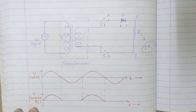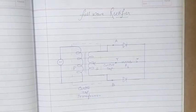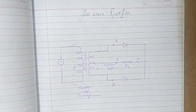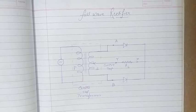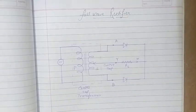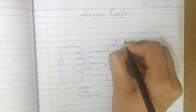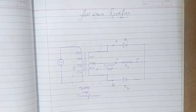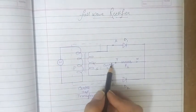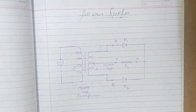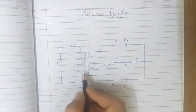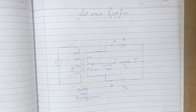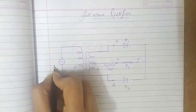Now let's move to the full wave rectifier. Here is the diagram. The major changes from half wave to full wave rectifier are: in this case we are going to use two diodes D1 and D2, and the transformer is not a normal transformer - it is a center-tapped transformer connected to diodes D1 and D2.